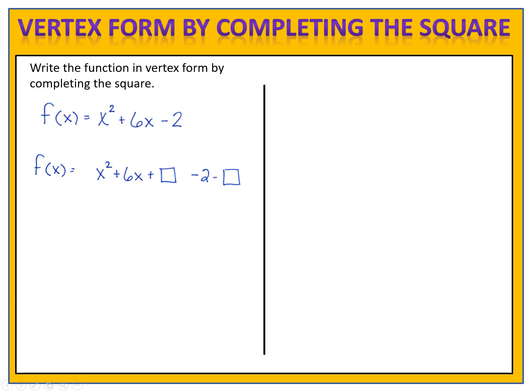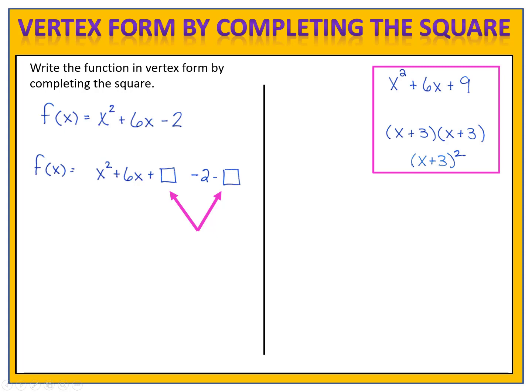We're going to put numbers in that box to give us a perfect square trinomial, so that when we factor the first three terms we end up with a binomial squared. We go to the middle term — x squared plus 6x plus box — and take half of the number in front of x. That number is 6, half of it is 3, and we square it: 3 squared is 9. So 9 is the number we put in both boxes.